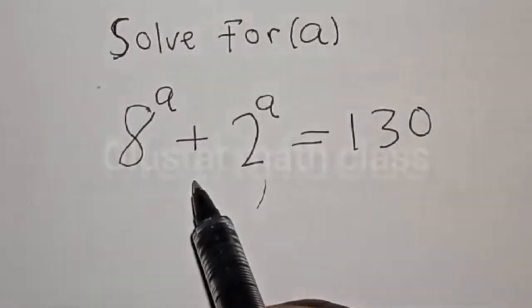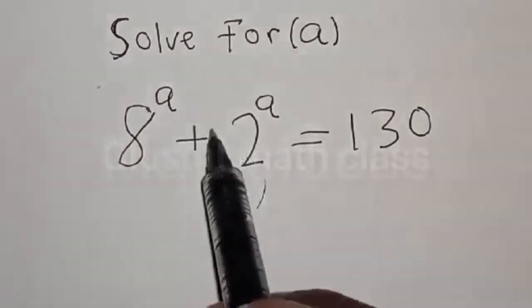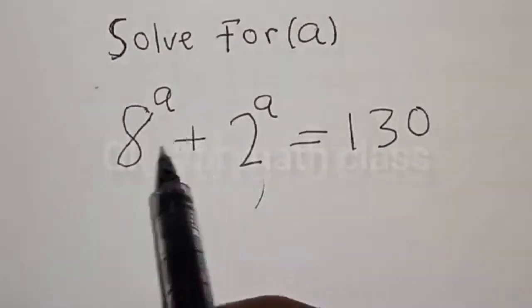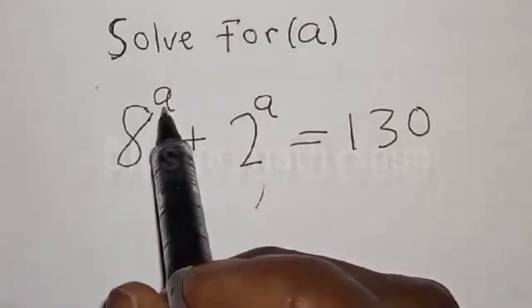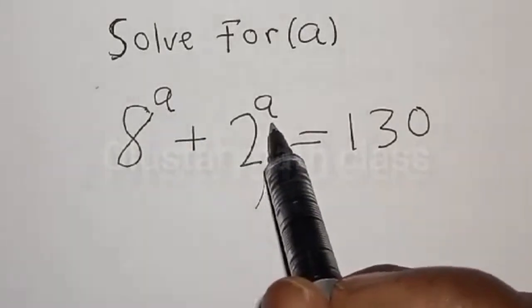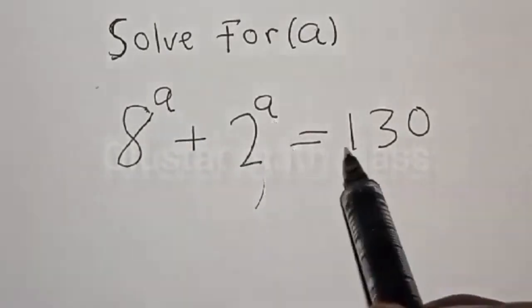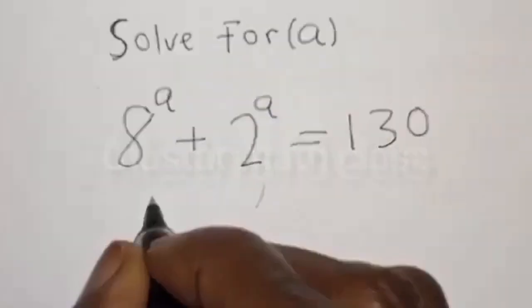Hi everyone, we want to find the value of a from this given exponential equation. We have 8 raised to power a plus 2 raised to power a is equal to 130.